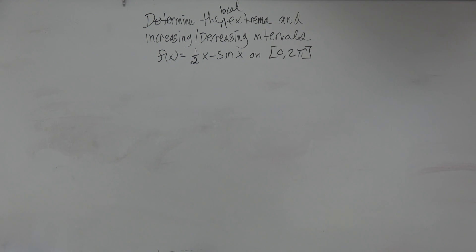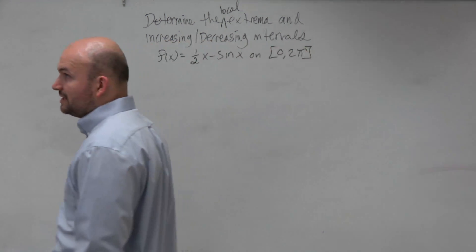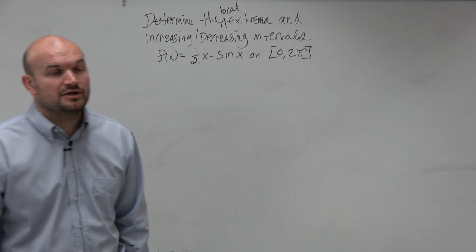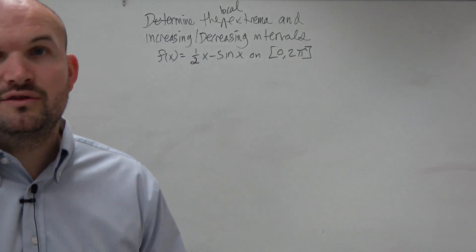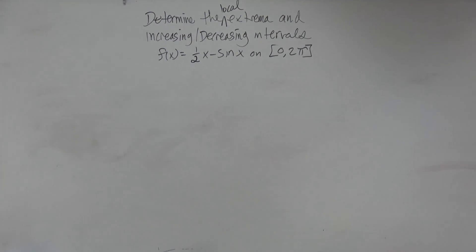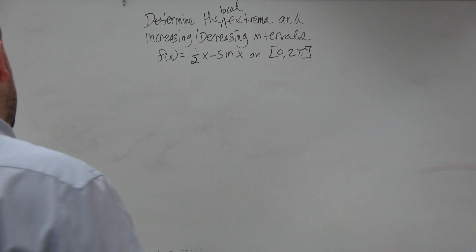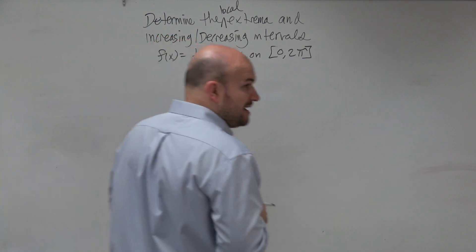Have the units circled down at least the first quadrant. So determine the local extrema and increasing, decreasing intervals. If we want to find the extrema or the local extrema, we know that's going to occur when our derivative is changing from positive to negative or negative to positive, right?